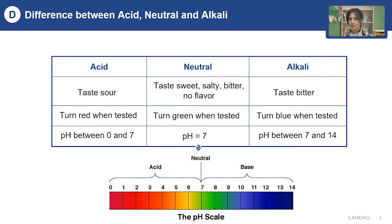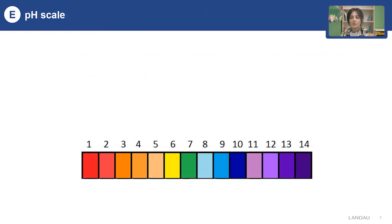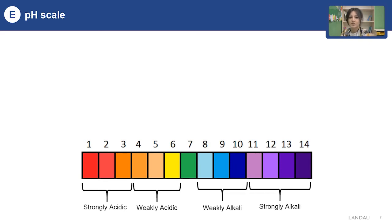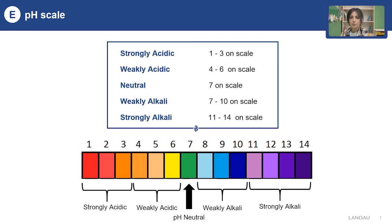Now let's look at the pH scale. The term pH stands for potential of hydrogen, which measures how acidic or basic a substance is. Because of the concentration of acids and alkalis, we divide them into several groups. Please pause the video and look at this pH scale. From 1 to 3 we call strongly acidic, from 3 to 6 weakly acidic, 7 is neutral, from 7 to 10 weakly alkaline, and from 11 to 14 strongly alkaline.